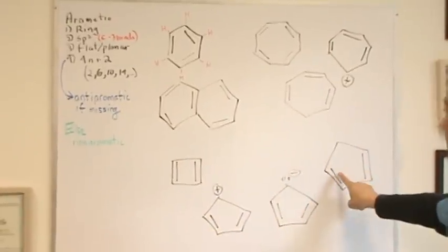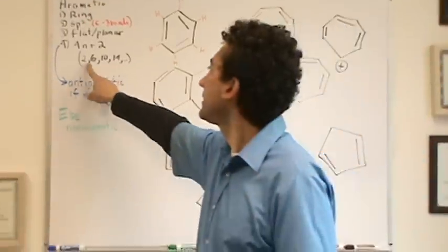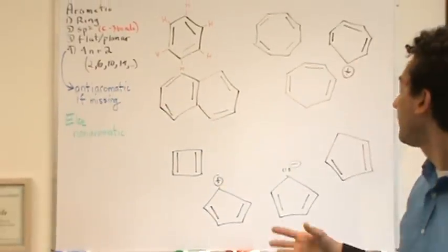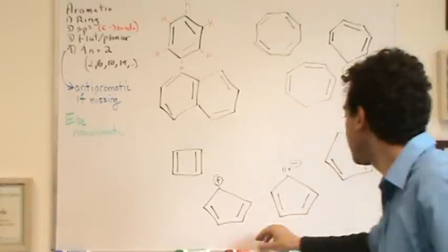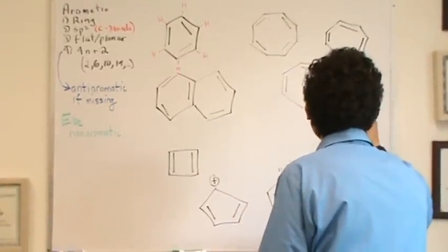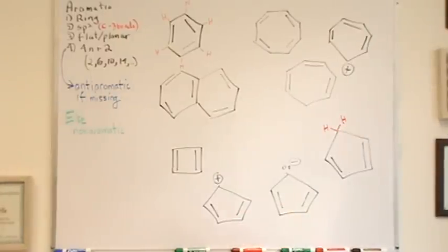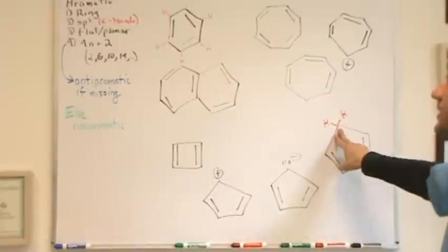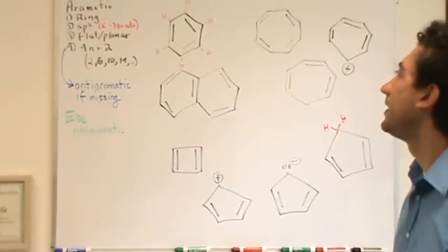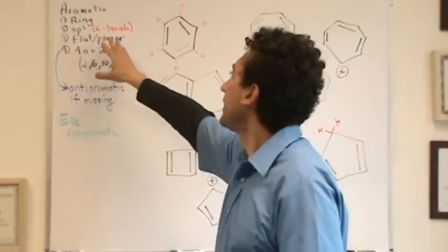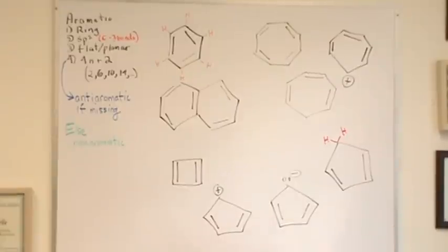Let's go right here. This has 2, 4. You might think, oh, 4, it doesn't fit Huckel's rule. Everything else fits. You might think this is anti-aromatic. However, this carbon right here is sp3 hybridized, because the carbon has 4 groups or 4 sets of bonds, 4 single bonds, in this case. So, this doesn't even fit in the aromatic category, because it's not flat. It's not sp2 hybridized. So, really, this right here is non-aromatic. It's not even in the aromatic category.